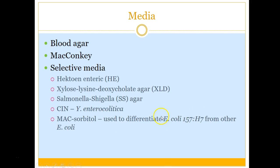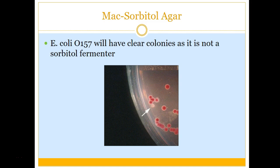E. coli O157 will be clear colonies on MacConkey sorbitol, whereas the rest of the E. coli will be a mauve-y pink color. So if you grow on MacConkey sorbitol, you're looking for clear colonies. If you have a clear colony, proceed to work it up to see if it's E. coli O157. If there are no clear colonies, you're pretty much good. Here it's showing E. coli O157 as the clear colony and the mauve-y pink that the rest of the E. coli take on.